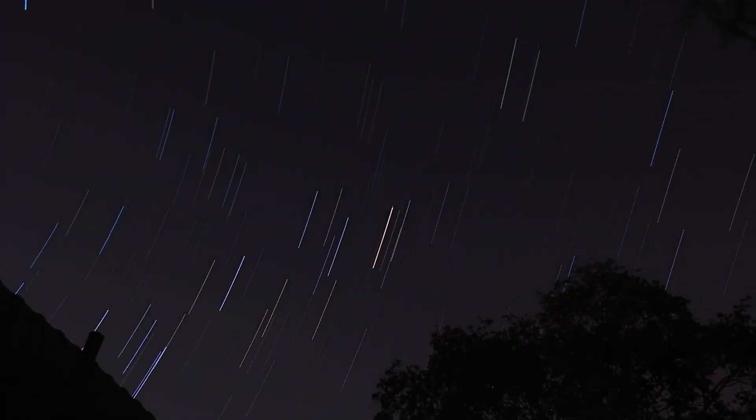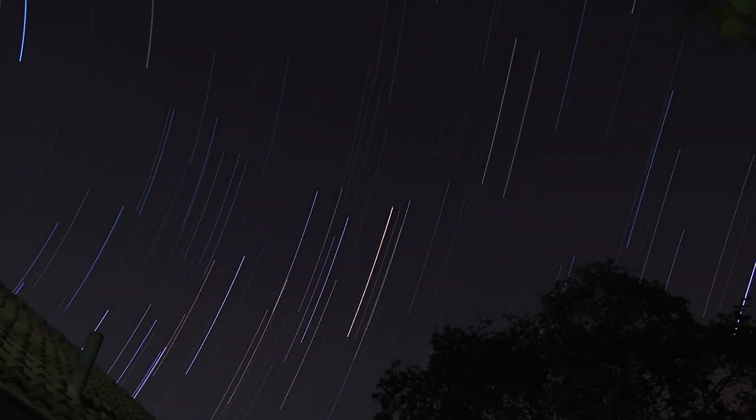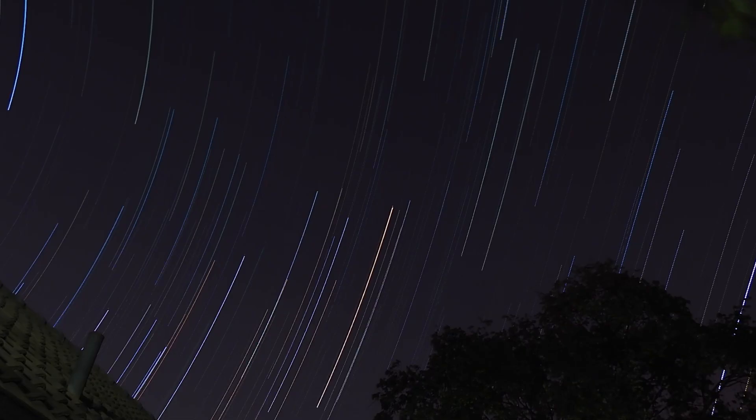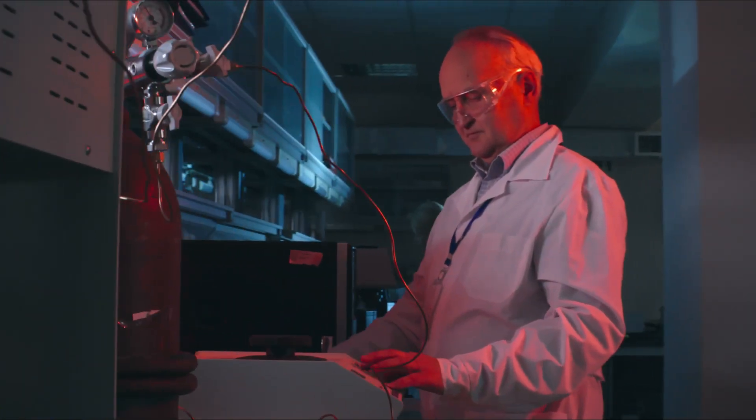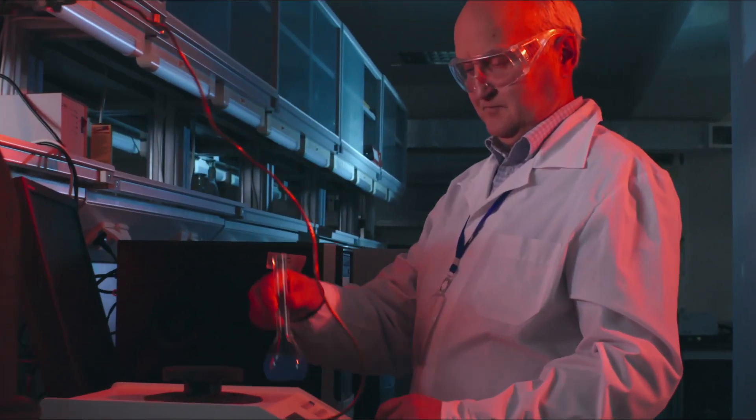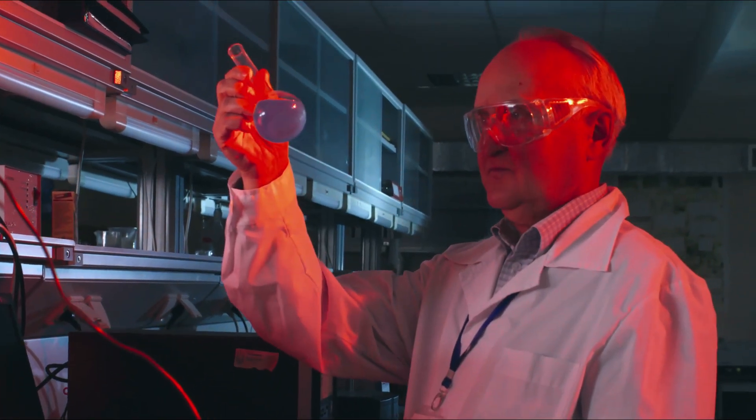From these thousands of precise data points, astronomers built a detailed ephemeris—a celestial map predicting the object's location hour by hour. This entire process hinges on a single crucial variable: the residuals.